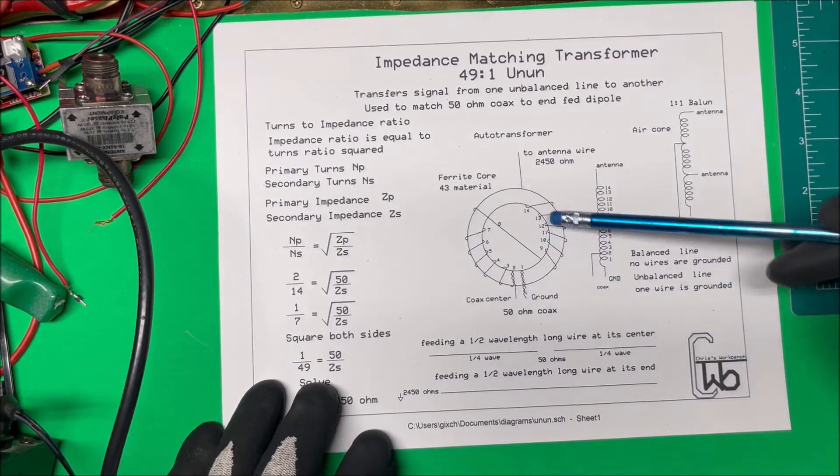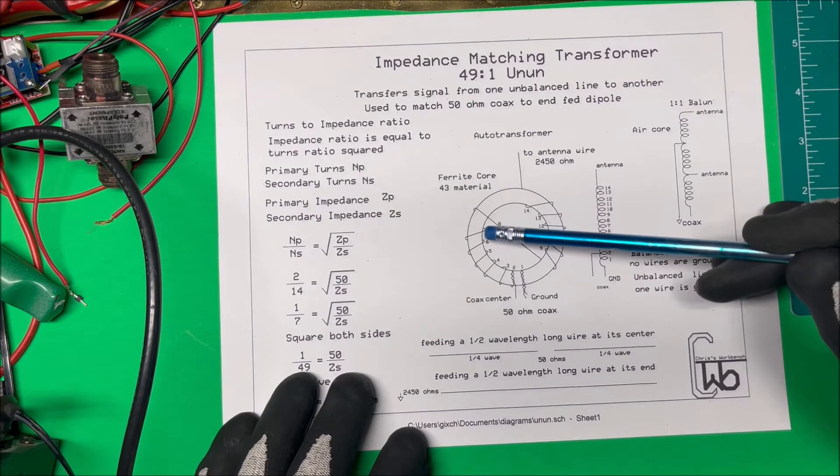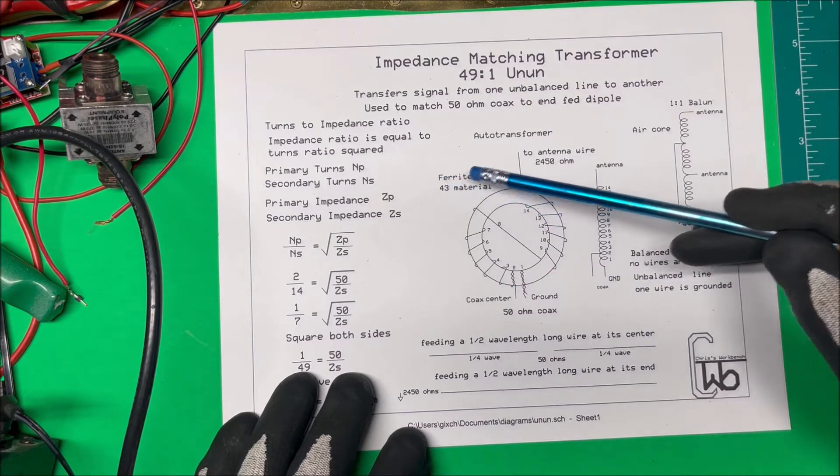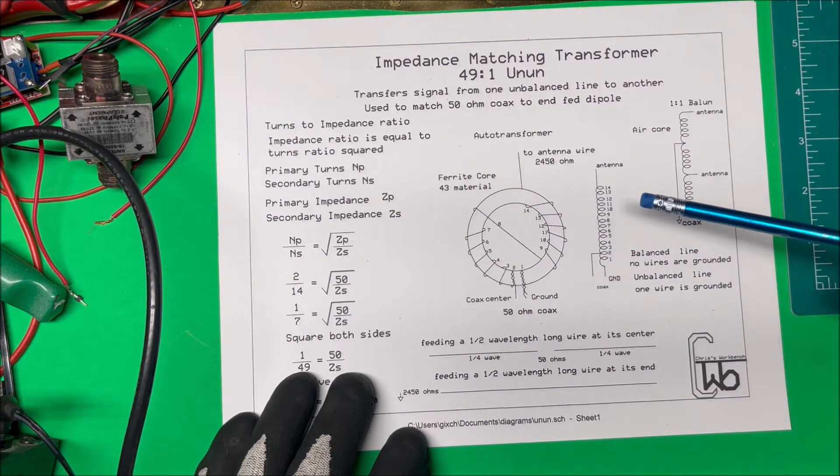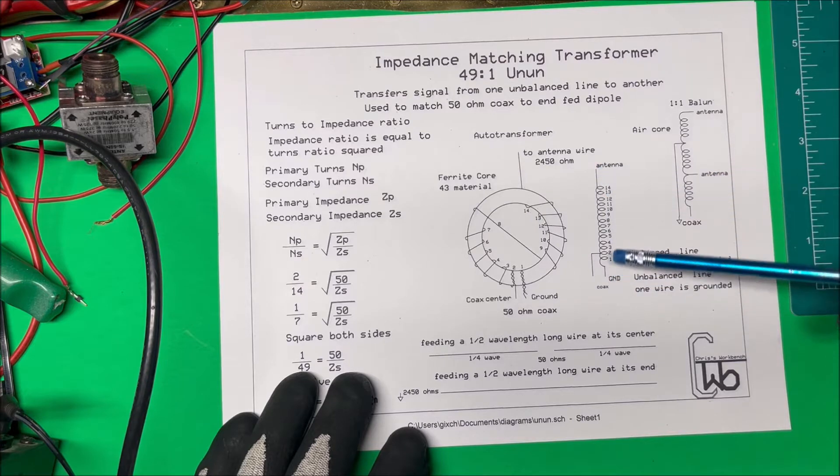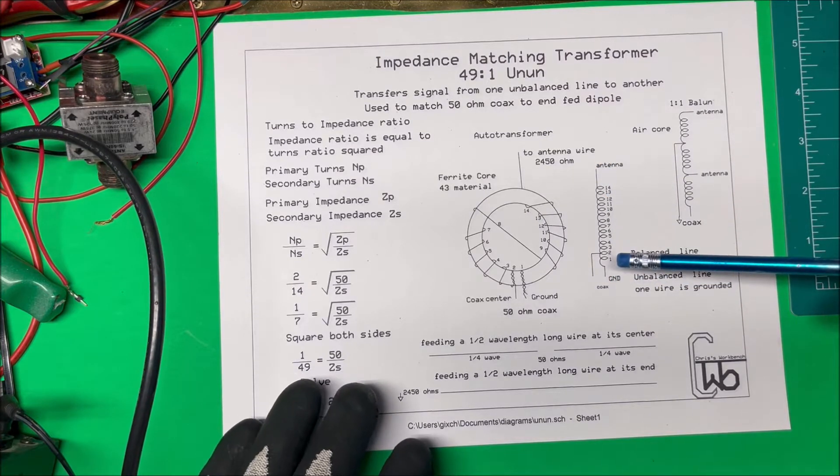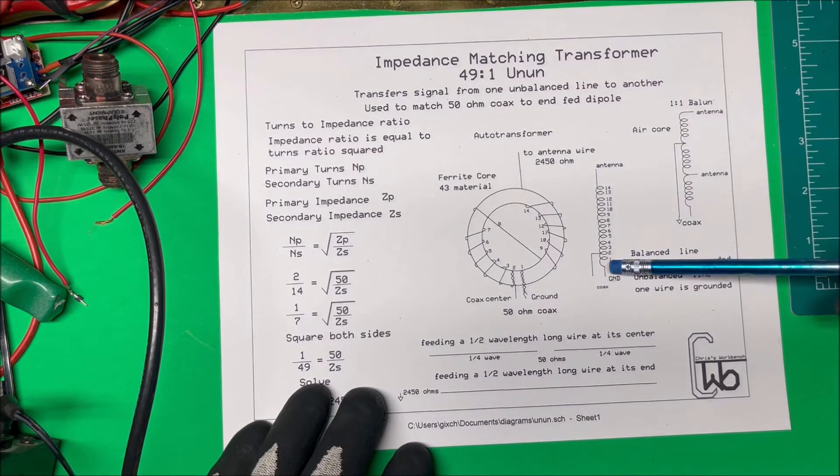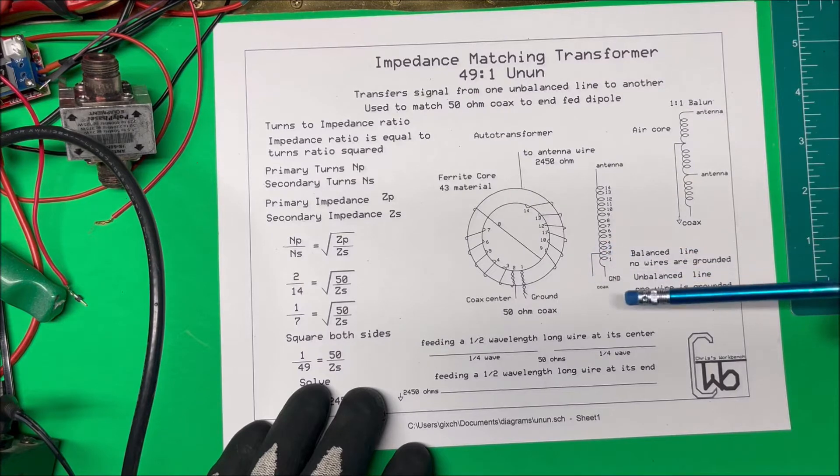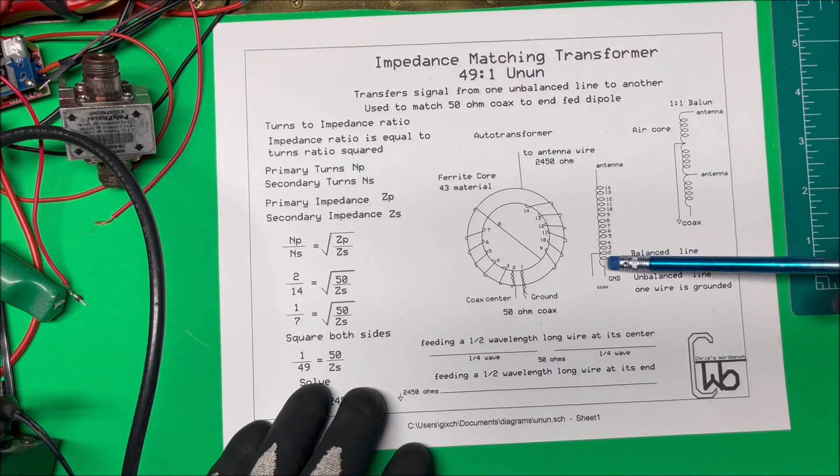So here's the transformer here, it's wound on a toroid coil, a ferrite core. I use number 43 material for that but it's just an auto transformer. So here we can see that there's 14 windings and we're feeding into the second one so the ratio here is 2 to 14.